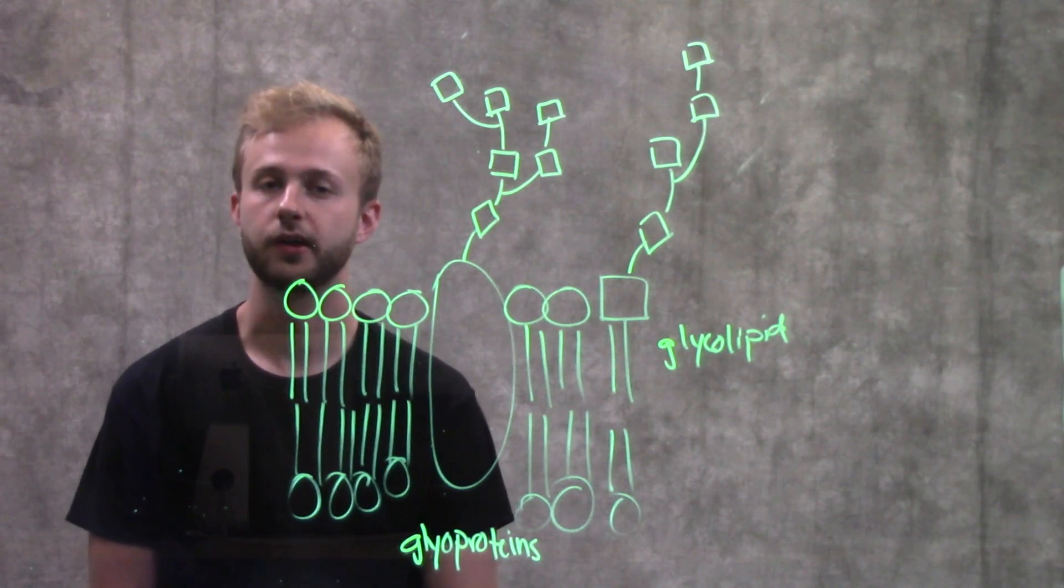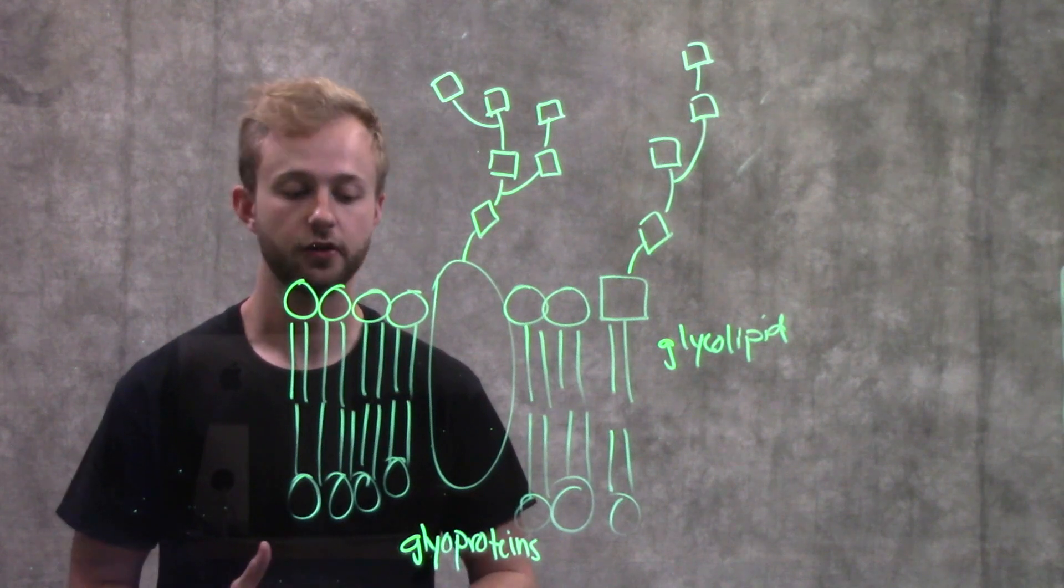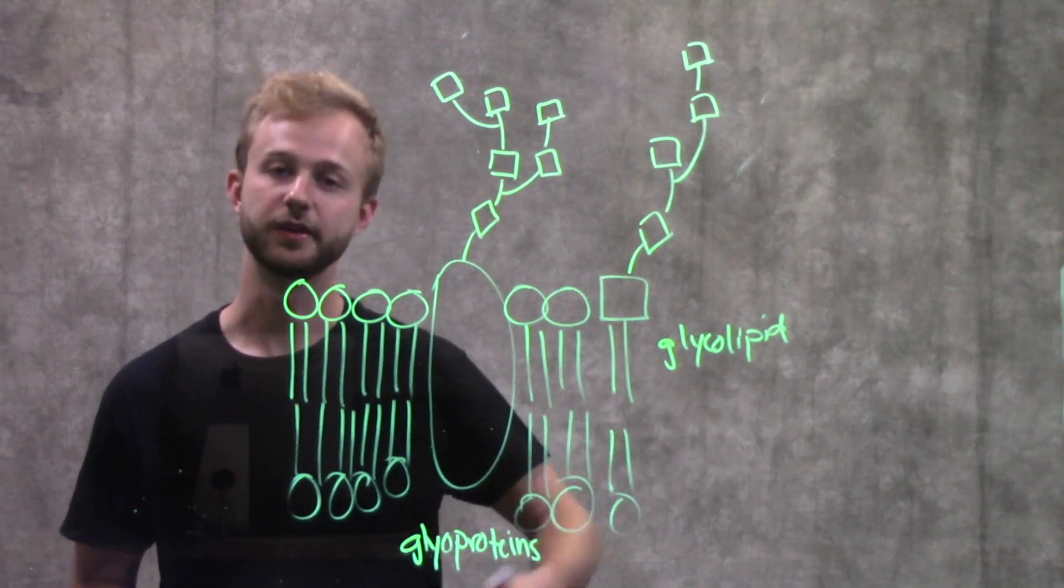This video is going to be about membrane carbohydrates. The two kinds of carbohydrates in our membranes that we need to know about are glycoproteins and glycolipids.